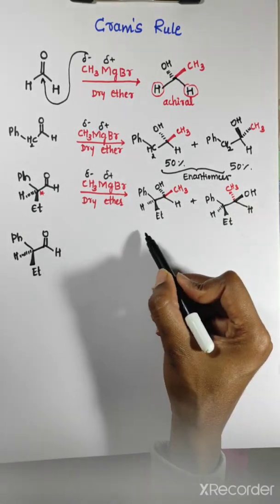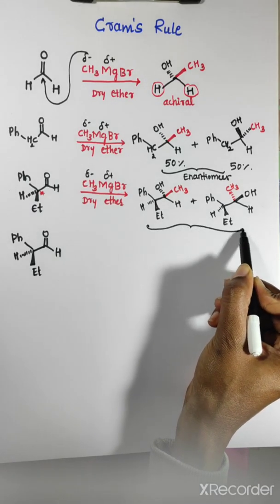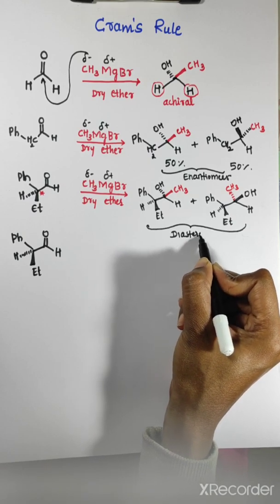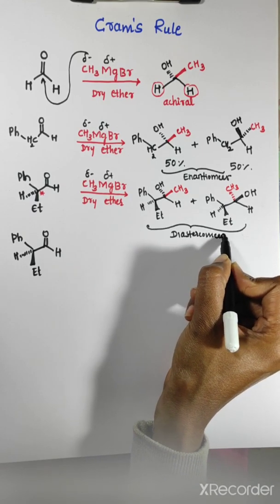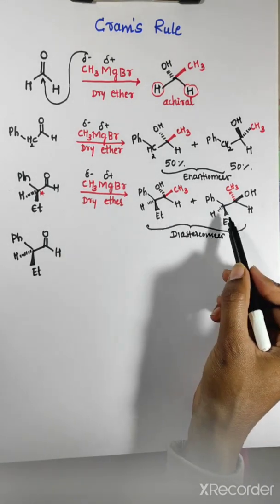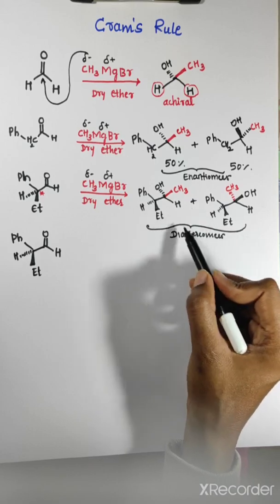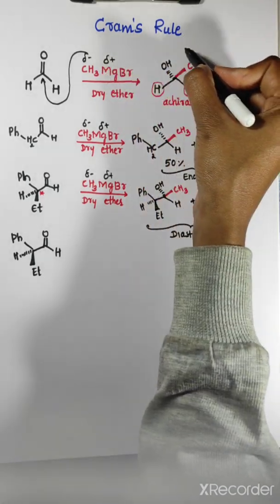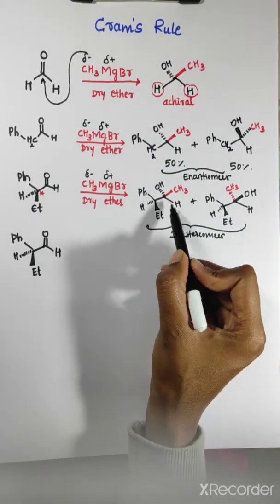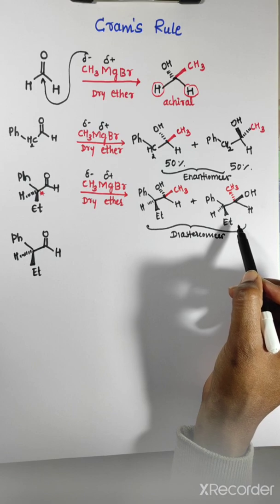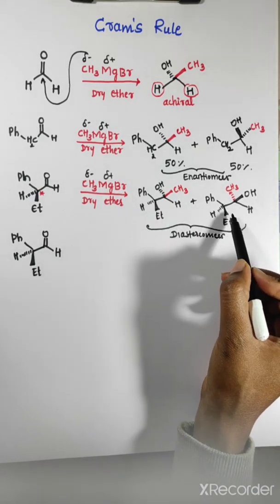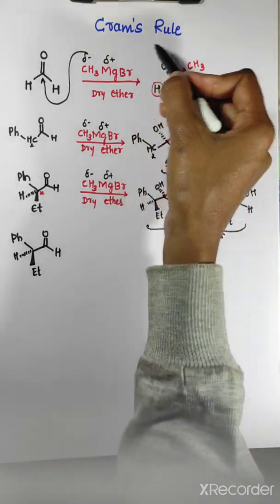These two products are diastereomers. Diastereomers means one is major and one is minor. These two are diastereomers, and to study which is major and which is minor, we need to study Cram's rule. Cram's rule is applicable here for diastereomers - one isomer is major and another is minor.